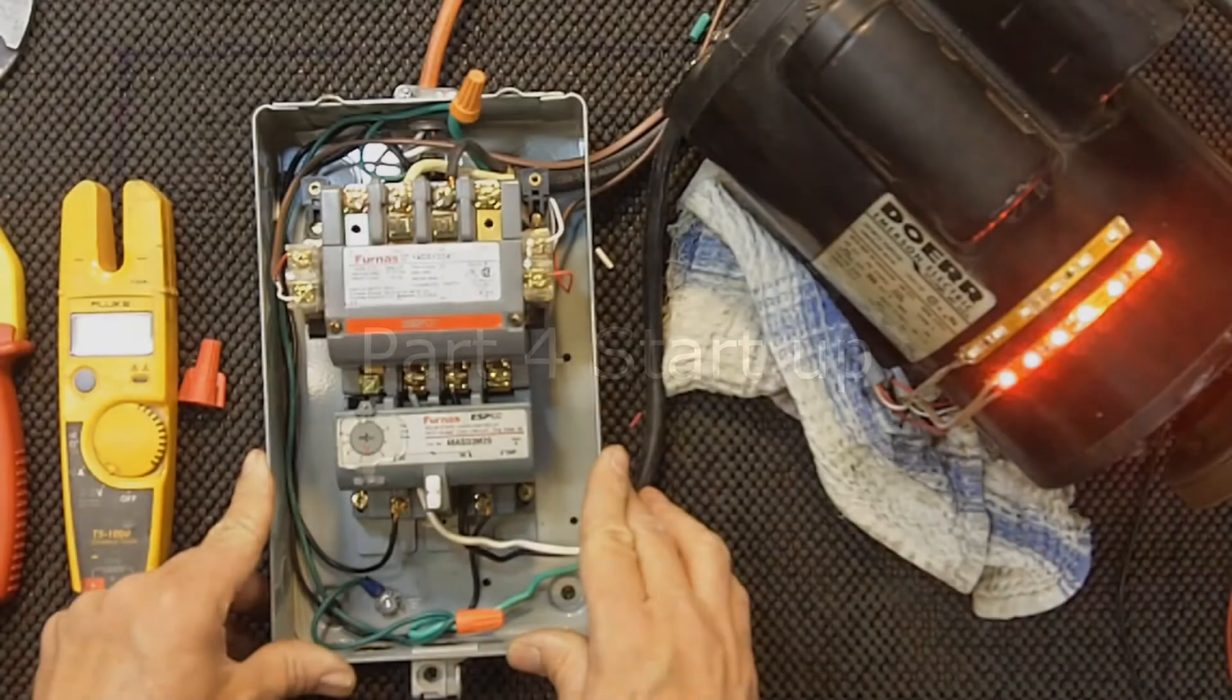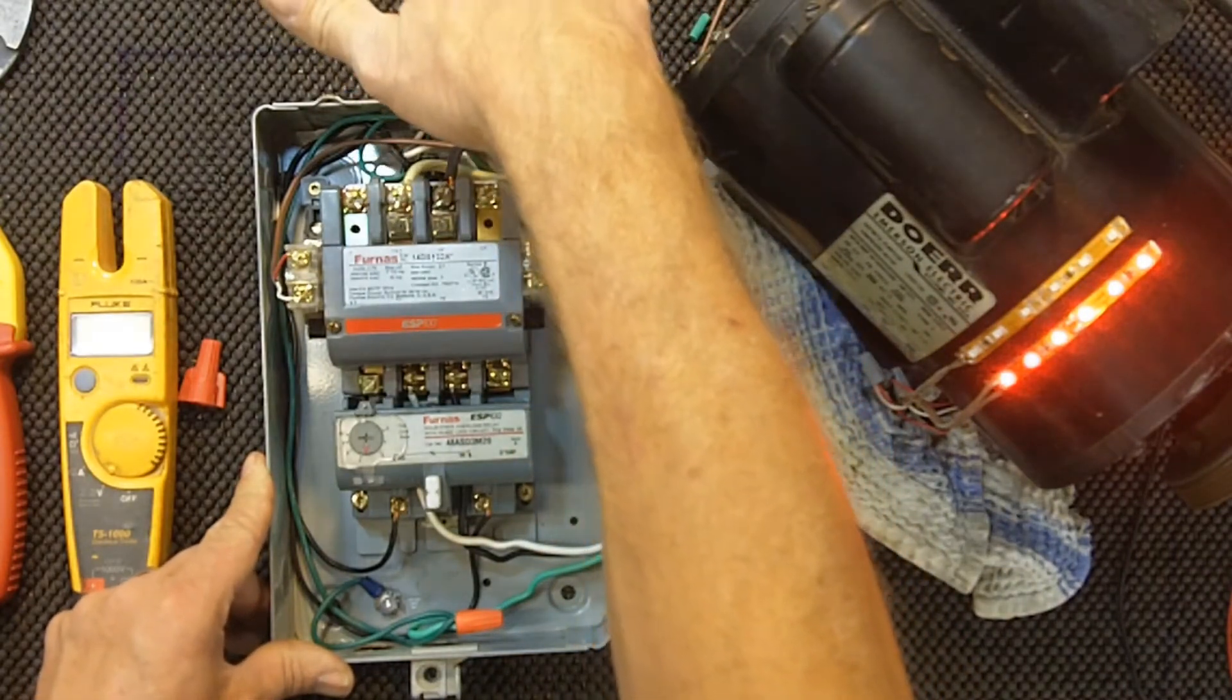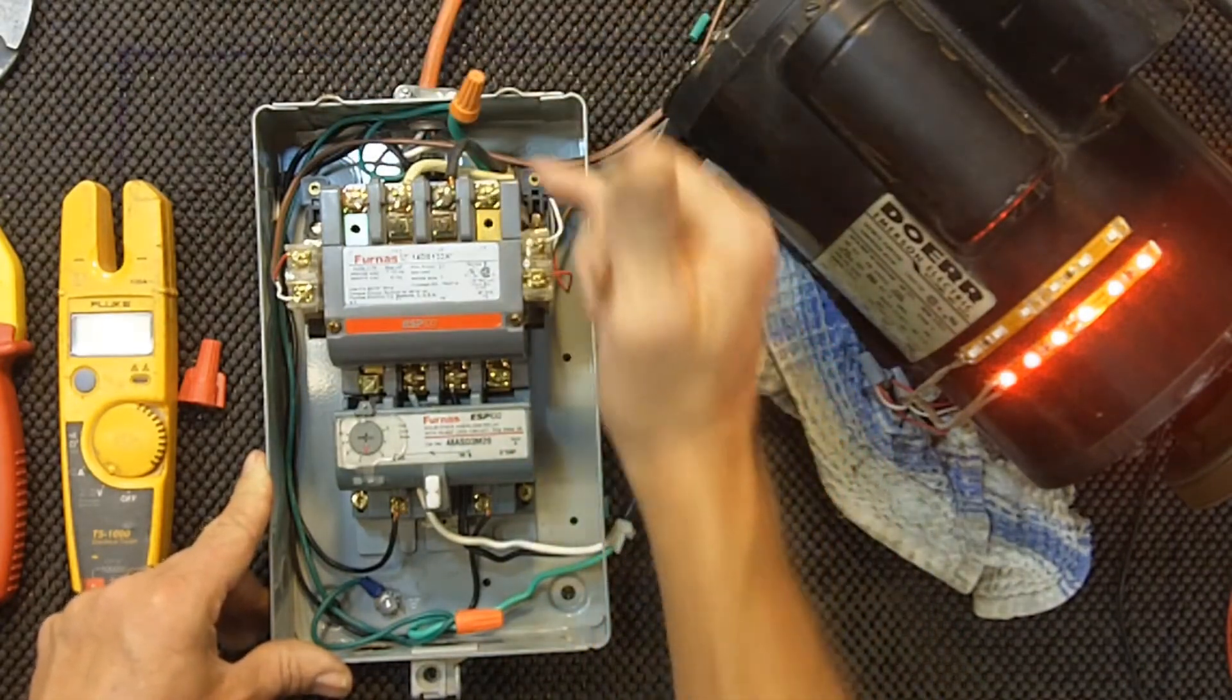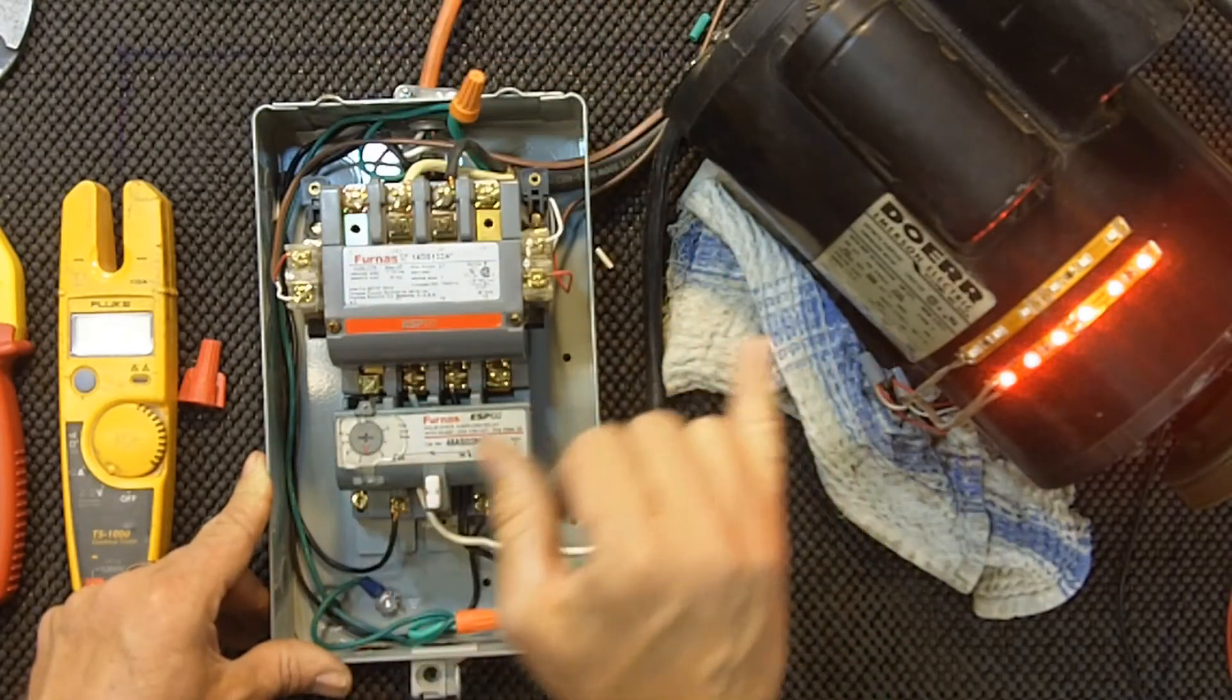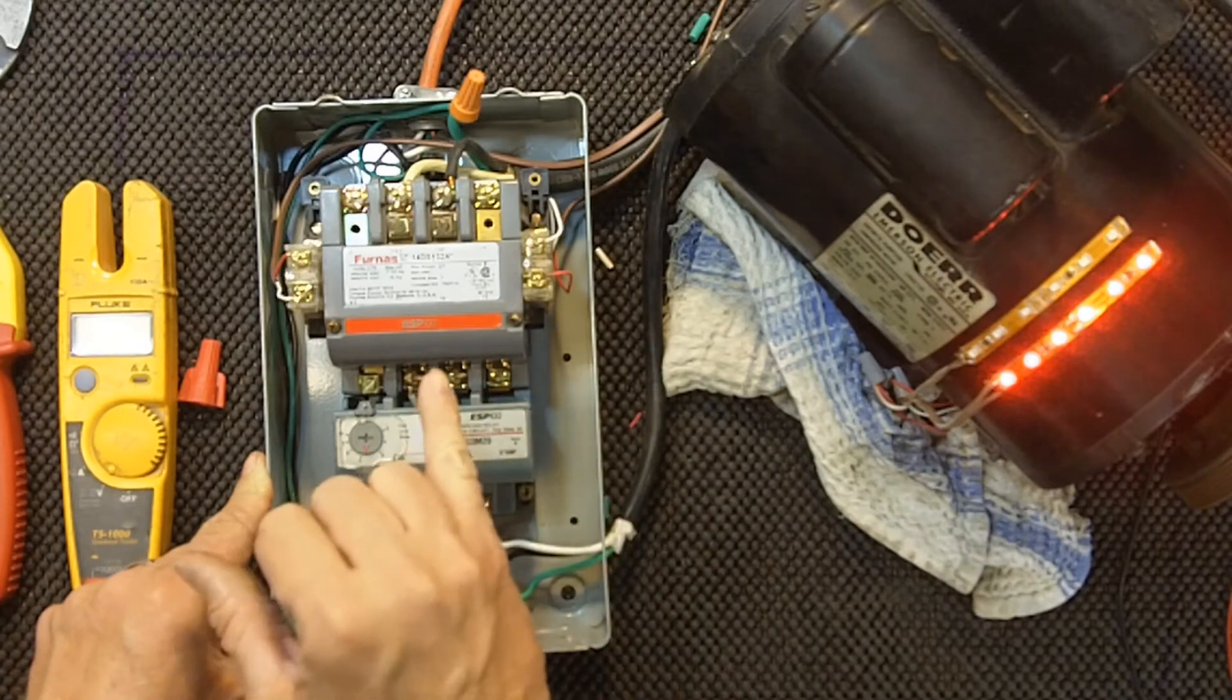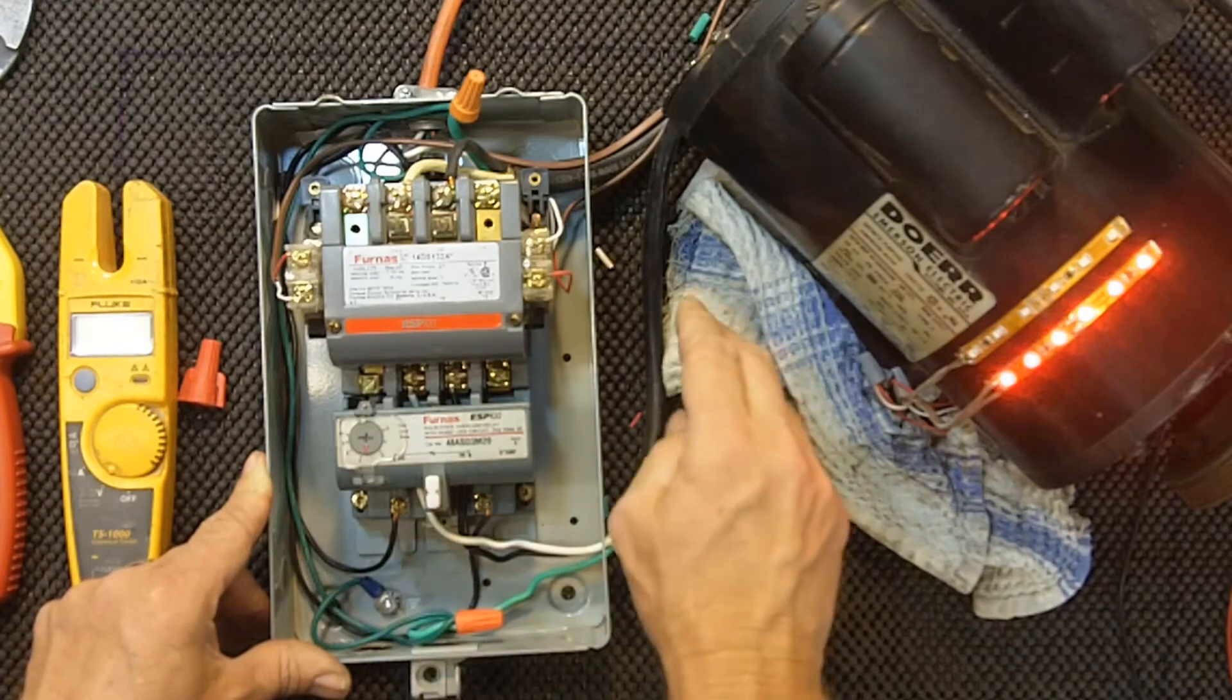I have our contactor wired up here, and I've got my 110 coming in, which is the control voltage for the coil, and then I've got 220 coming in for the motor itself, and it's 220 single phase, and then I've got the load side going back out.